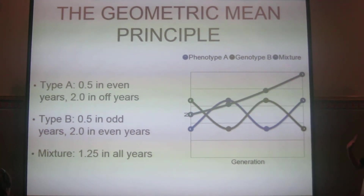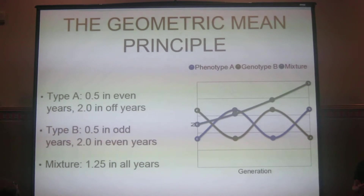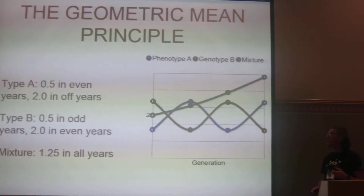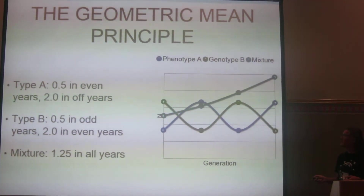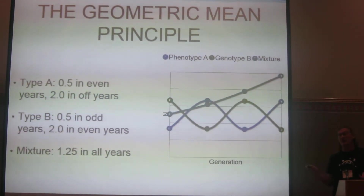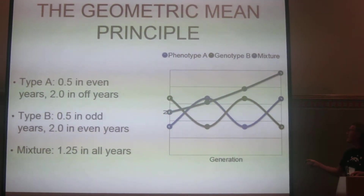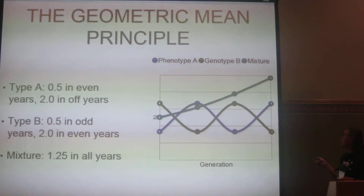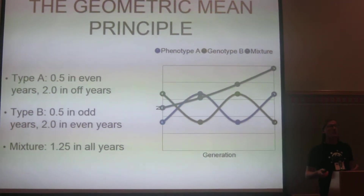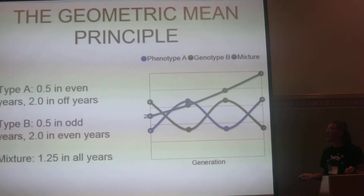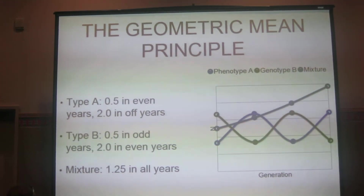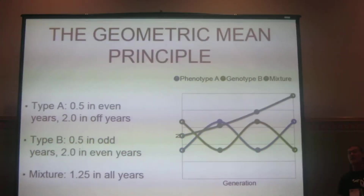A really classical result in this area is the idea that in fluctuating environments, the geometric mean fitness averaged over time is going to be a measure of selection — it's going to be a measure of clone growth rate. What I've put on this figure is a comparison between two different phenotypes, type A and type B. One does well in odd years, one does well in even years, and it's set up so that one doubles or goes down by half every other generation. Over the long run, their geometric mean fitness is one, so they're not going up or down. But a strategy — a genotype that produces a mixture of offspring, half blue and half green — has an average fitness each generation of 1.25, showing geometric growth. This is the classical result that bet hedging, diversifying offspring, can be favored in random environments.